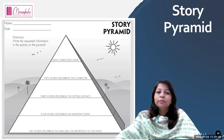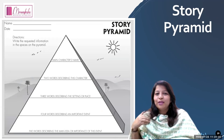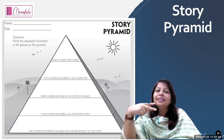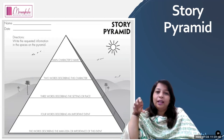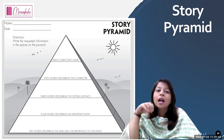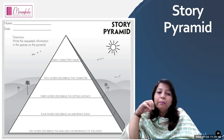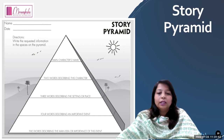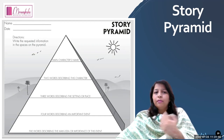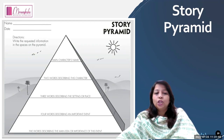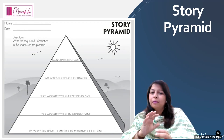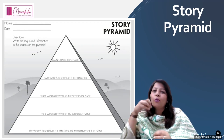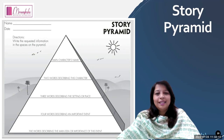And then story pyramid: main character's name, two words describing that character using adjectives, three words describing the story's place, four words describing an important event, and five words describing the main idea or the importance of the event. This is how children will be able to come up with a different kind of story pyramid and story sequencing, taking out the important points and listing the same.